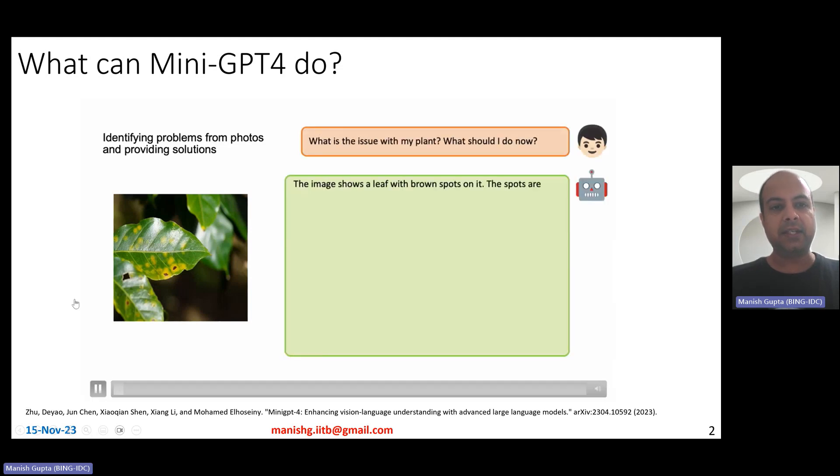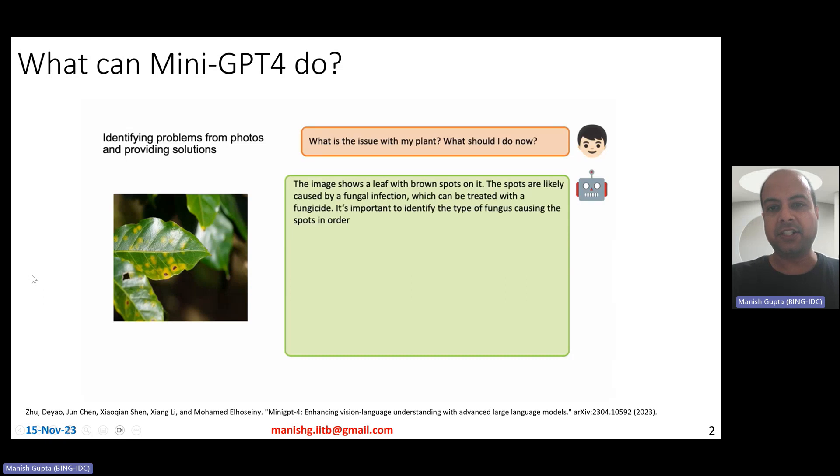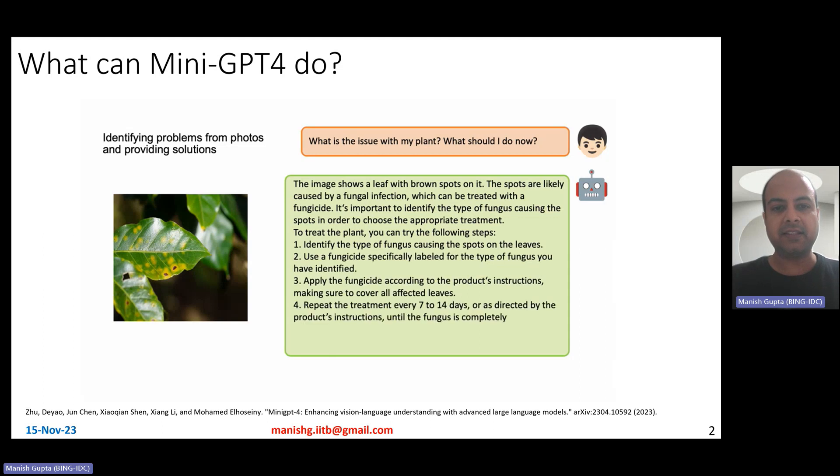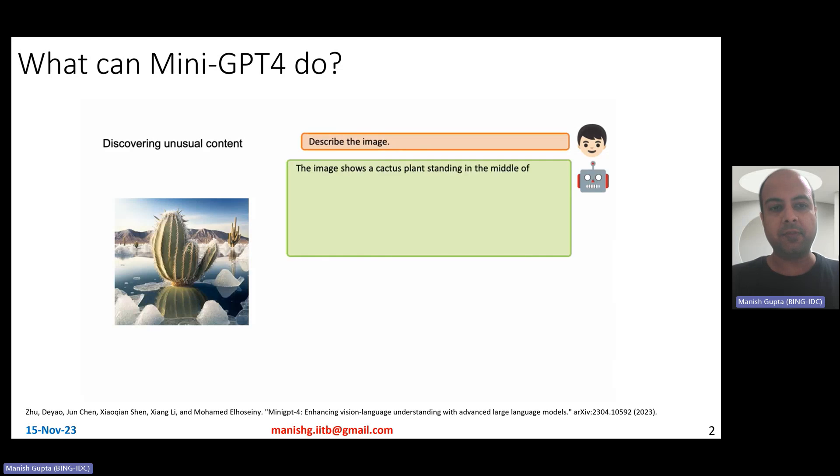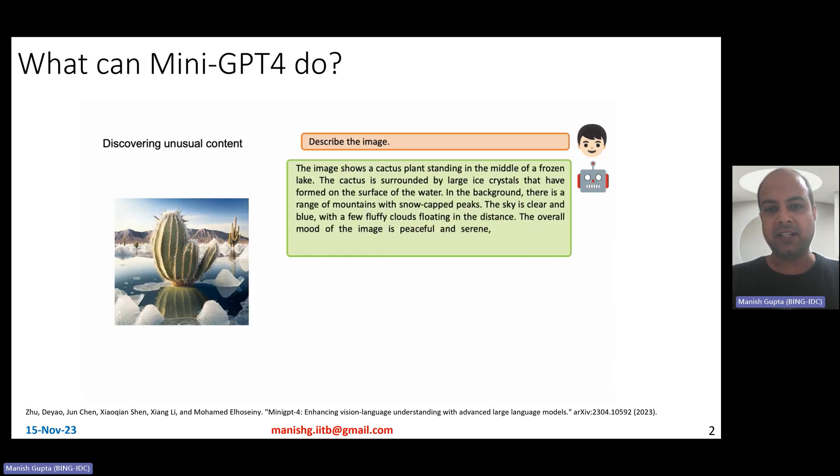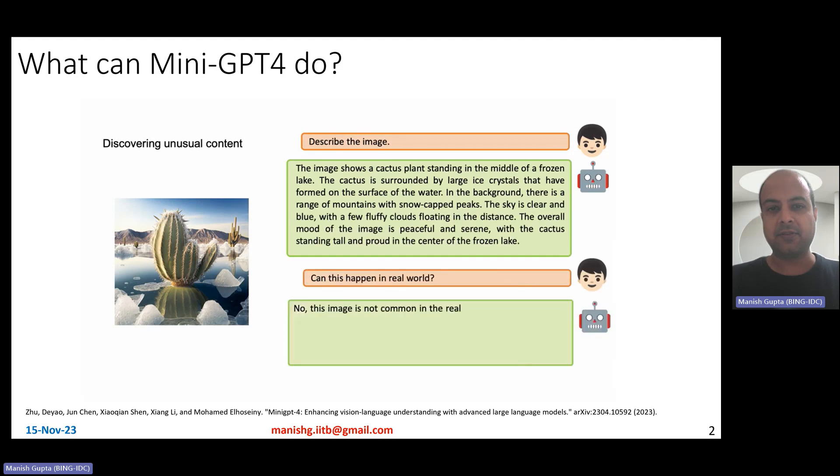It can basically take an image and also a question, what is the issue with my plant? What should I do now? Essentially come up with this nice message that seems like there is some disease and you can do these things. It identifies problems. It discovers unusual content, so you can describe this image and it basically says it's a cactus in the middle of a frozen lake and it's not usual to happen in the real world.